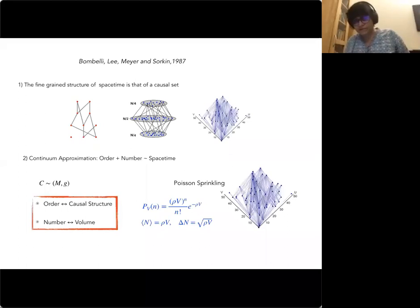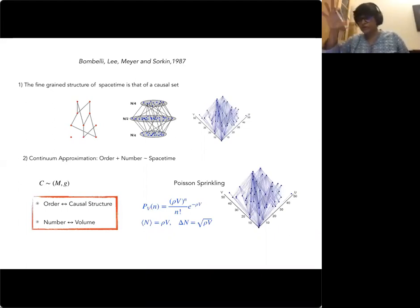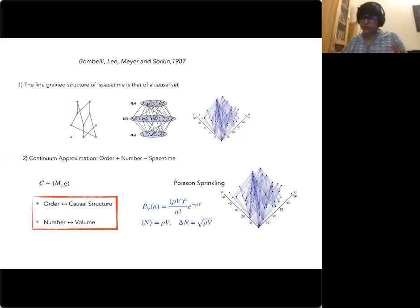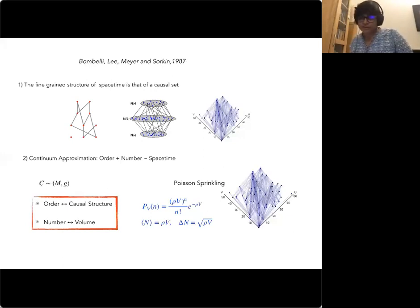The Poisson sprinkling is a uniform distribution — it depends only on spacetime volume — so it is Lorentz-invariant or covariant. On average, the number of elements equals ρV, and the fluctuation in number is √(ρV). This extra property leads to interesting predictions, including Sorkin's 1987 prediction for the cosmological constant fluctuation, which gave the observed value of ~10⁻¹²⁰.